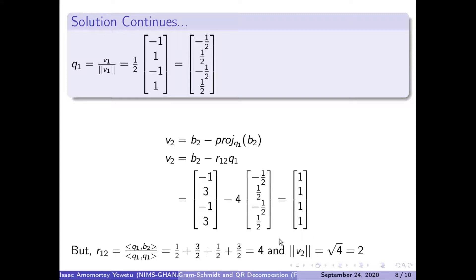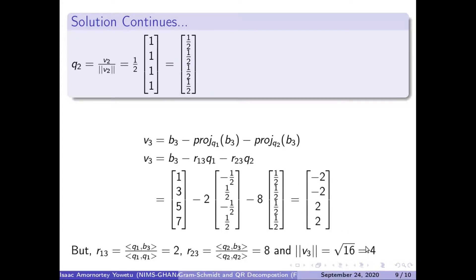Having obtained our V2, we find the norm of it, which gives us 2. Being able to obtain our V2 vector, we know the norm is 2, so we multiply one-half times our V2 vector, which gives us our Q2 vector.